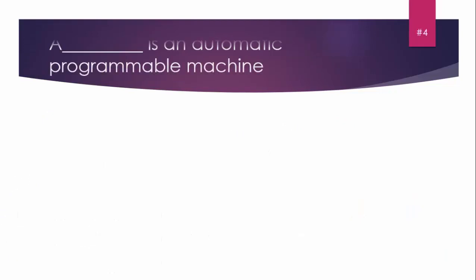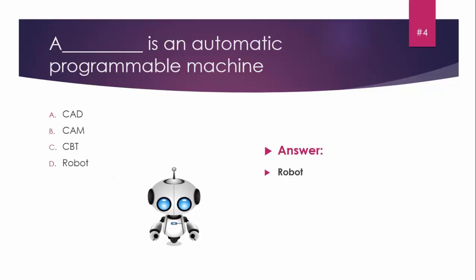MCQ number four: Blank is an automatic programmable machine. Options: A) CAD, B) CAM, C) CBT, D) Robot. The answer is Robot. A robot is an automatic programmable machine, which is a form of computer.